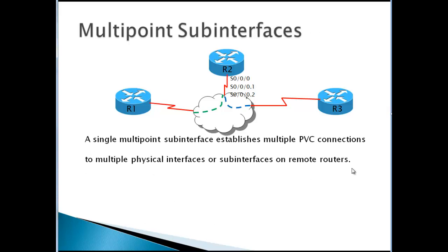Multipoint sub-interfaces: a single multipoint sub-interface establishes multiple PVC connections to multiple physical interfaces or sub-interfaces on remote routers. All participating interfaces are in the same subnet. Multipoint is efficient for IP addressing — you only lose two IP addresses per subnet rather than two per point-to-point link. However, the sub-interface acts like a non-broadcast multi-access frame relay interface, so routing update traffic is still subject to the split horizon rule.